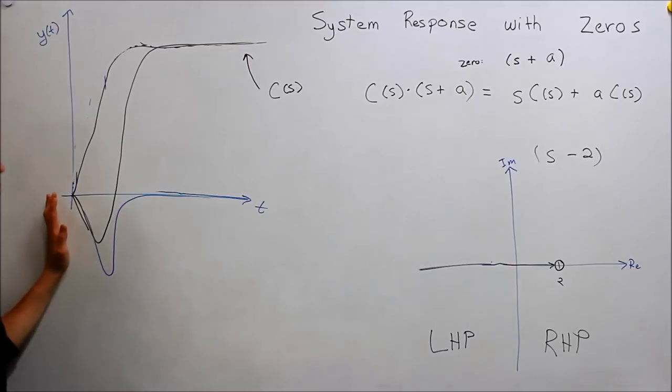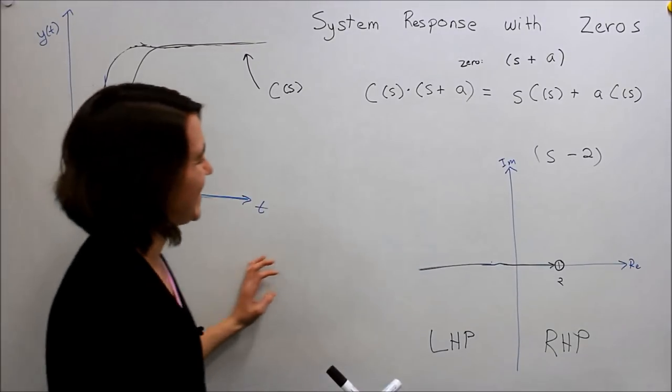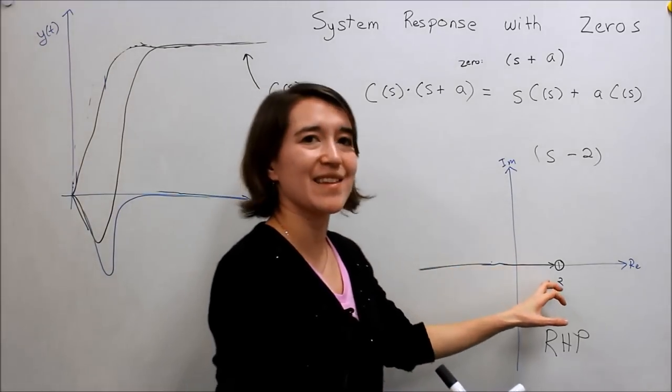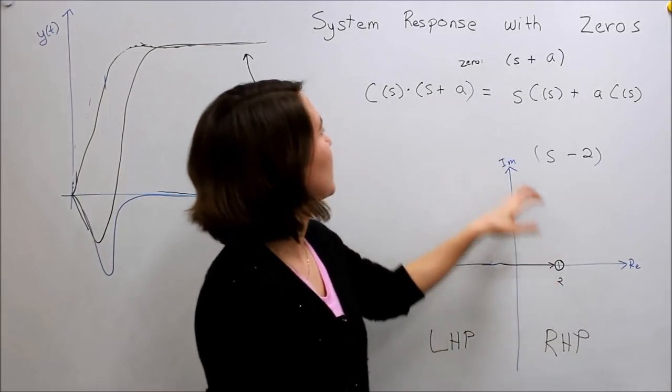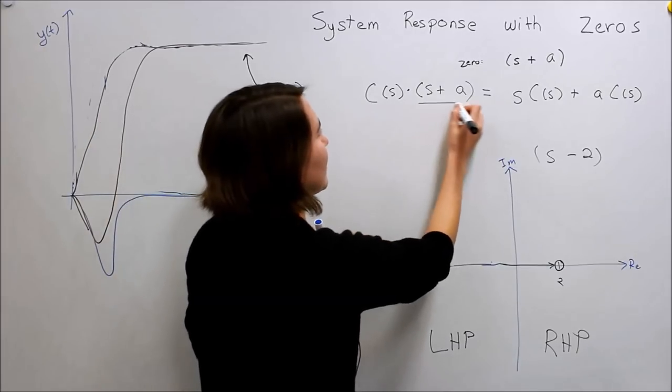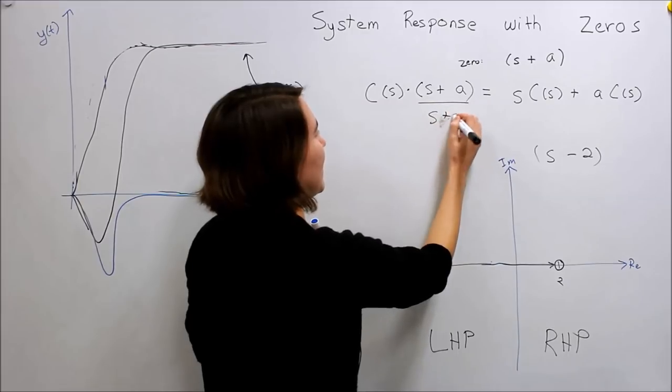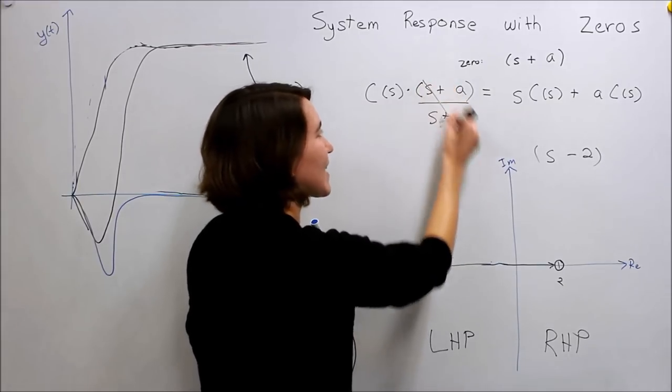So what we can do in our controller, which will be the next set of videos, is to try to cancel this zero out. So if we have this zero here and we can add another controller and we can make an S plus A, the same value, we can actually try to cancel these terms out.